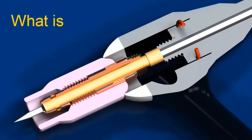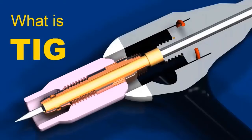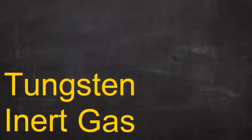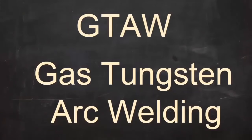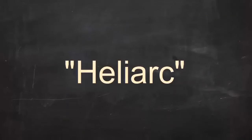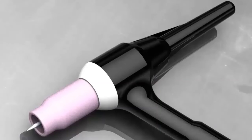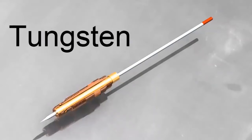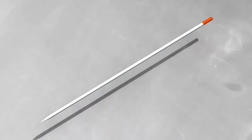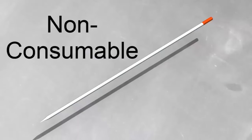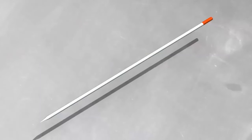TIG stands for Tungsten Inert Gas Welding. The American Welding Society calls this process Gas Tungsten Arc Welding, or GTAW. You might also hear it called HeliArc Welding. TIG welding uses a tungsten electrode. Tungsten has an extremely high melting point — when you TIG weld, the electrode gets hot but it doesn't melt. We say that it's a non-consumable electrode. That means it doesn't melt and become part of the weld.